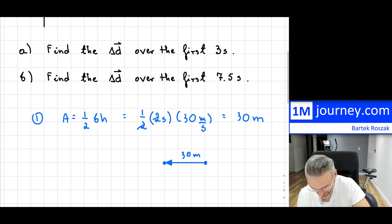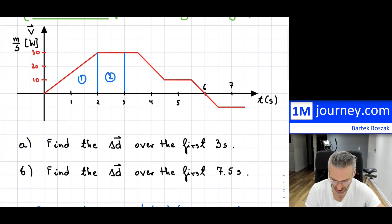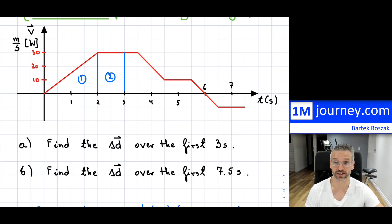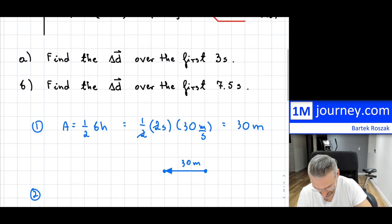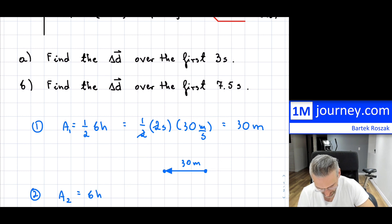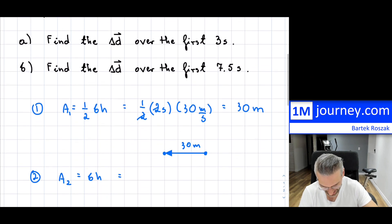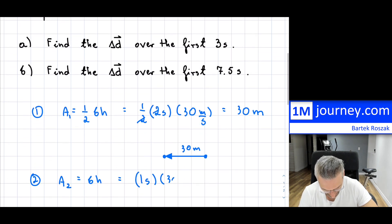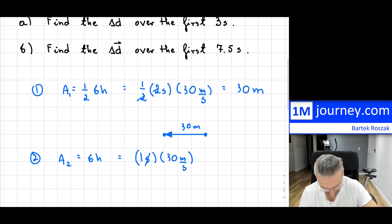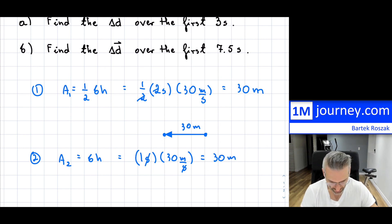The second piece is a rectangle, so finding the area is much easier — it's base times height. For area number two, the base is one second and the height is still 30 meters per second, all going west. The seconds cancel, giving me 30 meters — another 30 meters.